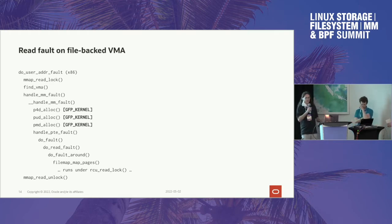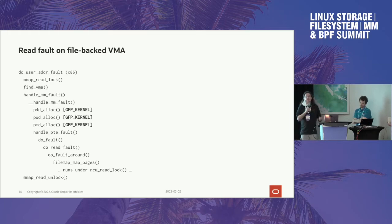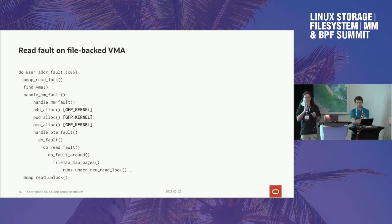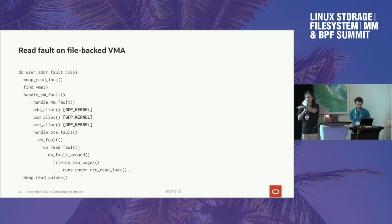We haven't even finished writing the code yet. We had a couple of goes at it but there's some problems. It's a win in terms of code complexity because we're moving code complexity out of the MM. We're getting rid of the VMA cache, the doubly linked list connecting all the VMAs together in a nice long chain, and we're getting rid of the RB tree, or at least the usage of the RB tree there.